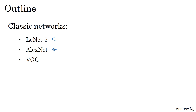AlexNet, which is often cited, and the VGG network. These are examples of pretty effective neural networks, and some of the ideas laid the foundation for modern computer vision. You'll see ideas from these papers that will probably be useful for your own work as well.